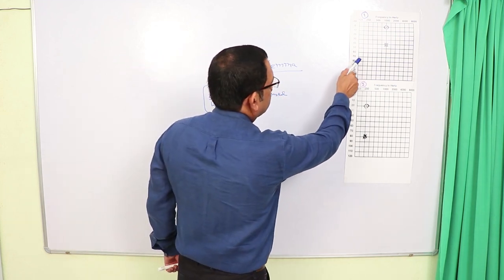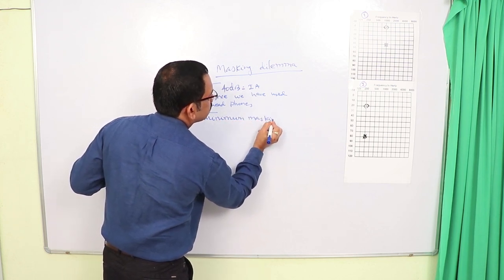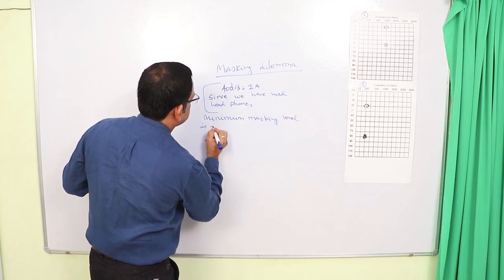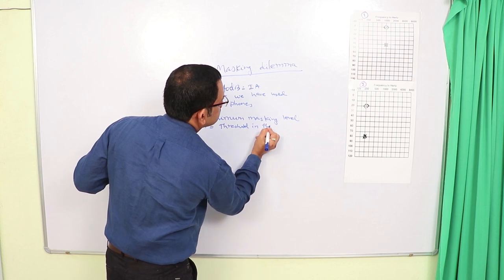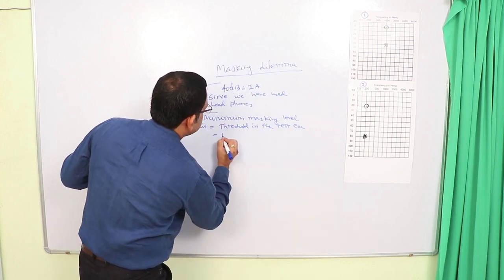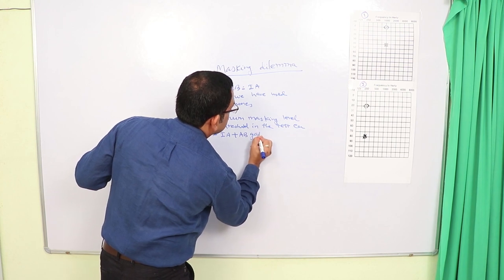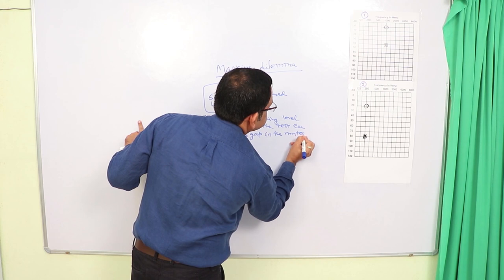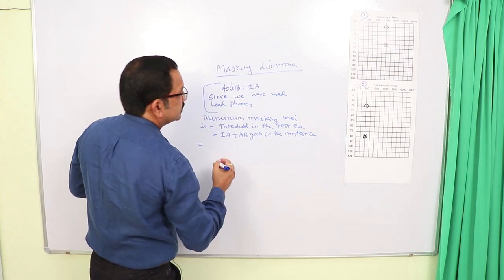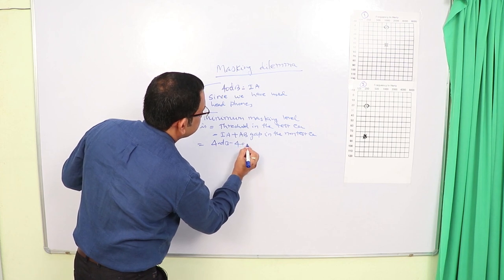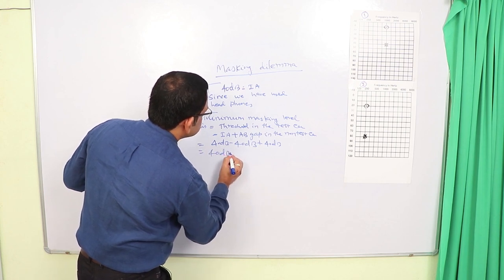Relating to audiogram number one, the minimum masking level is: threshold in the test ear minus inter-aural attenuation plus the AB gap in the non-test ear. In audiogram number one, the threshold in the test ear is 40 dB, minus IA that is 40 dB, and the AB gap is 40 dB. So it comes out to be 40 dB — that is the minimum level of masking.